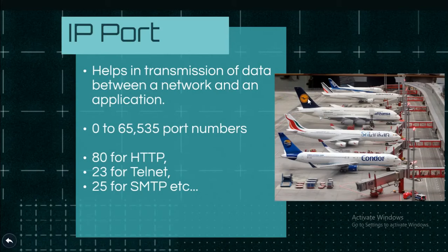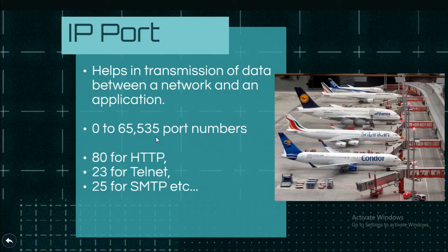So the definition is: a port number helps in the transmission of data between a network and an application. Port numbers below 1024 are reserved. These include HTTP, Telnet, and SMTP. HTTP is by default port number 80, Telnet is 23, and SMTP is 25. These are network applications, and port numbers are used to identify network applications.